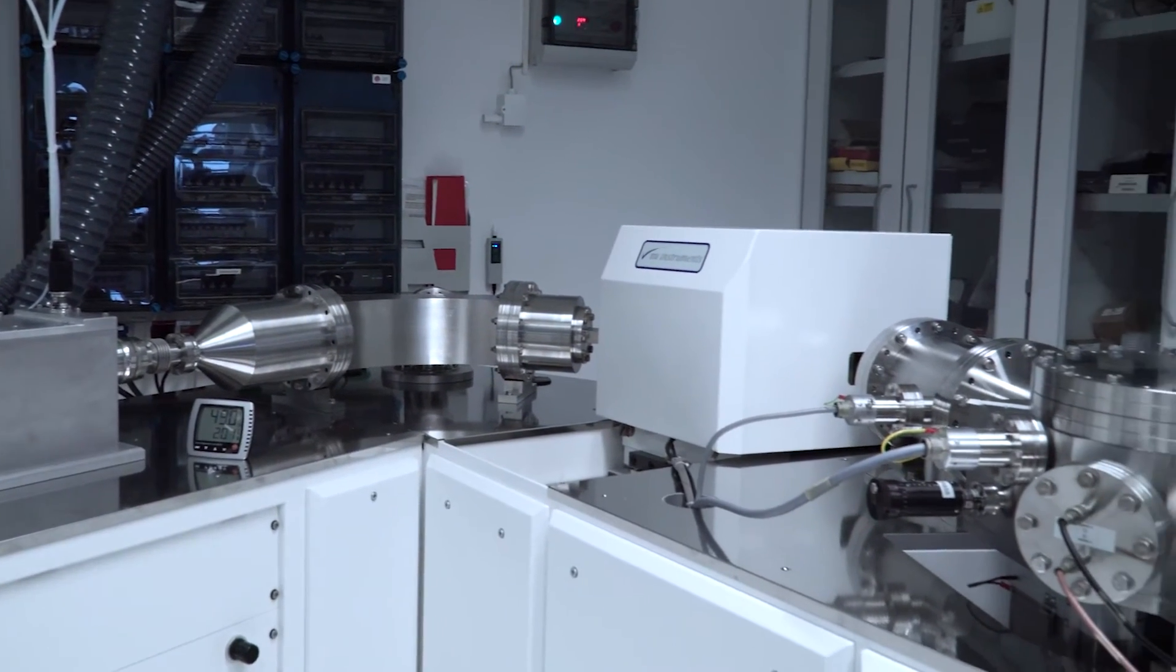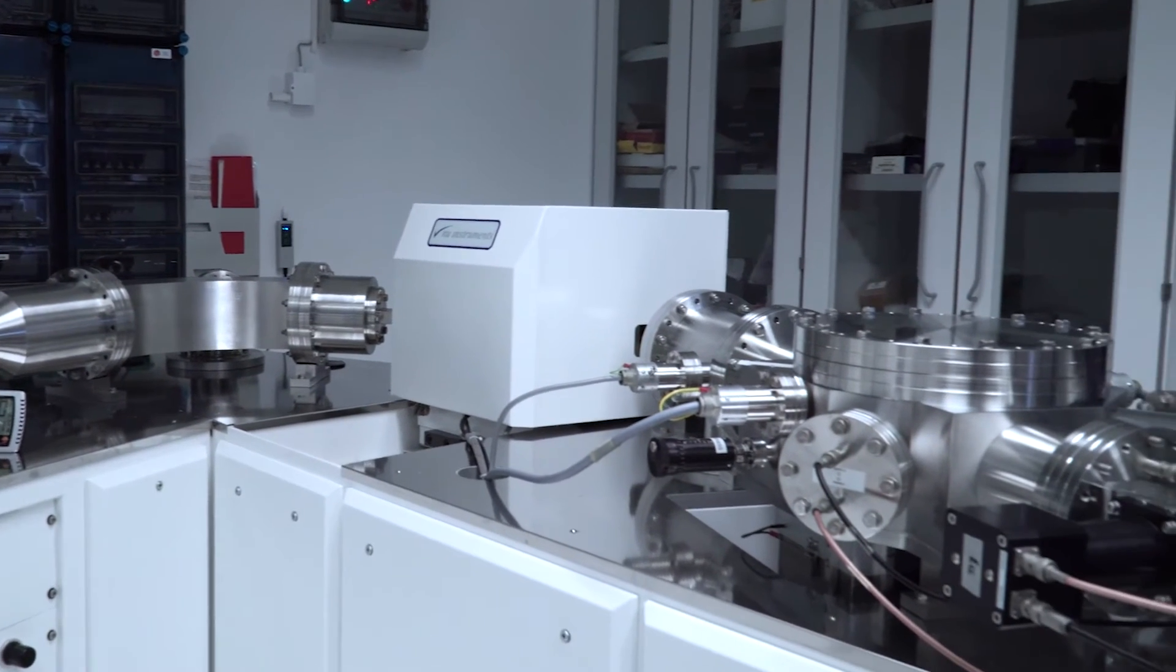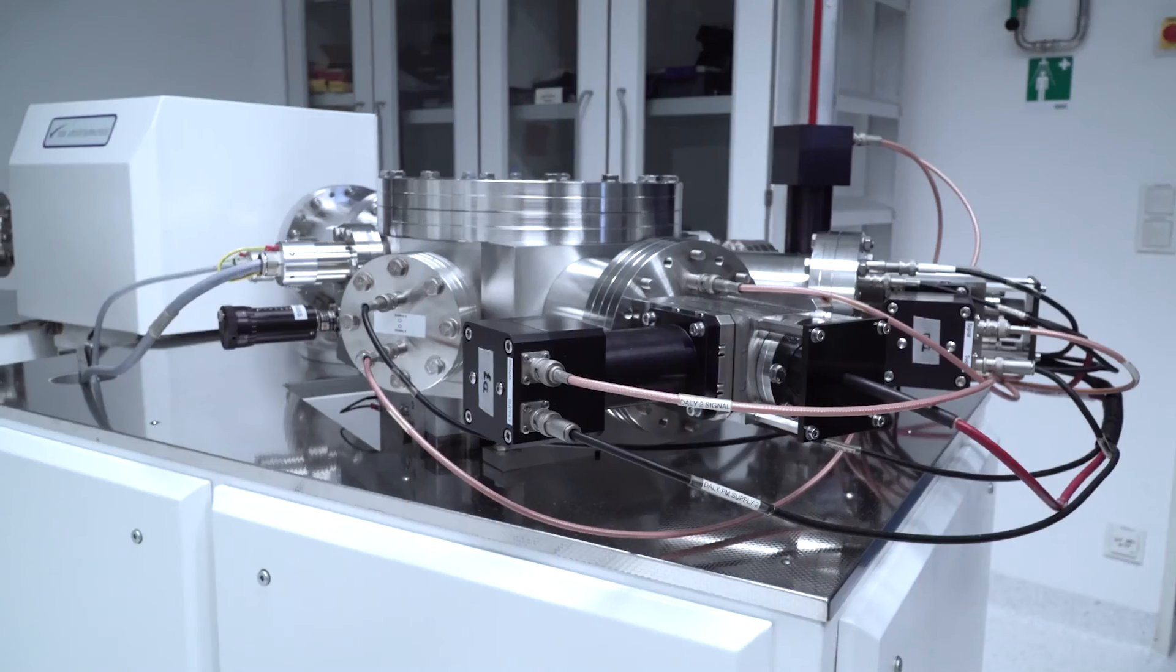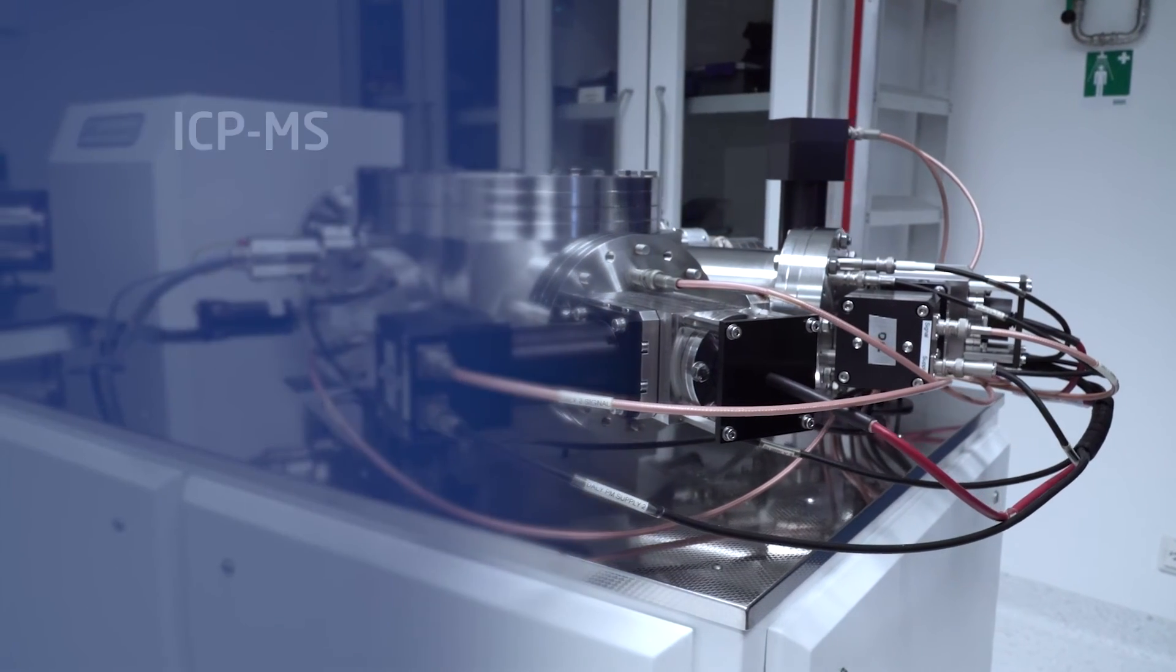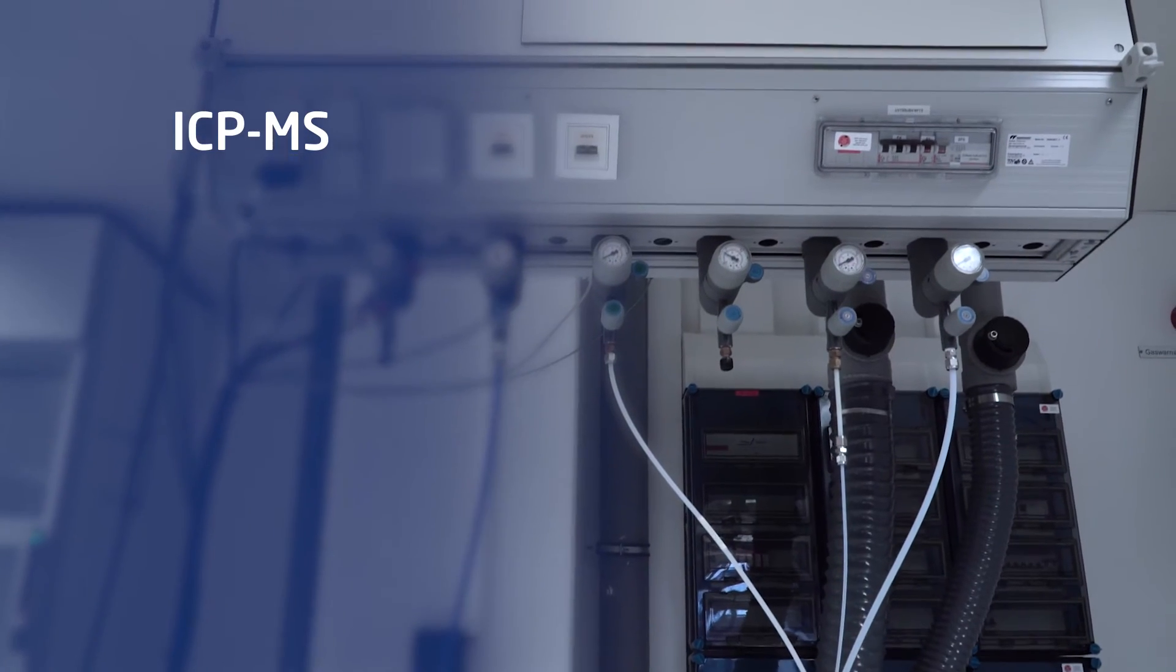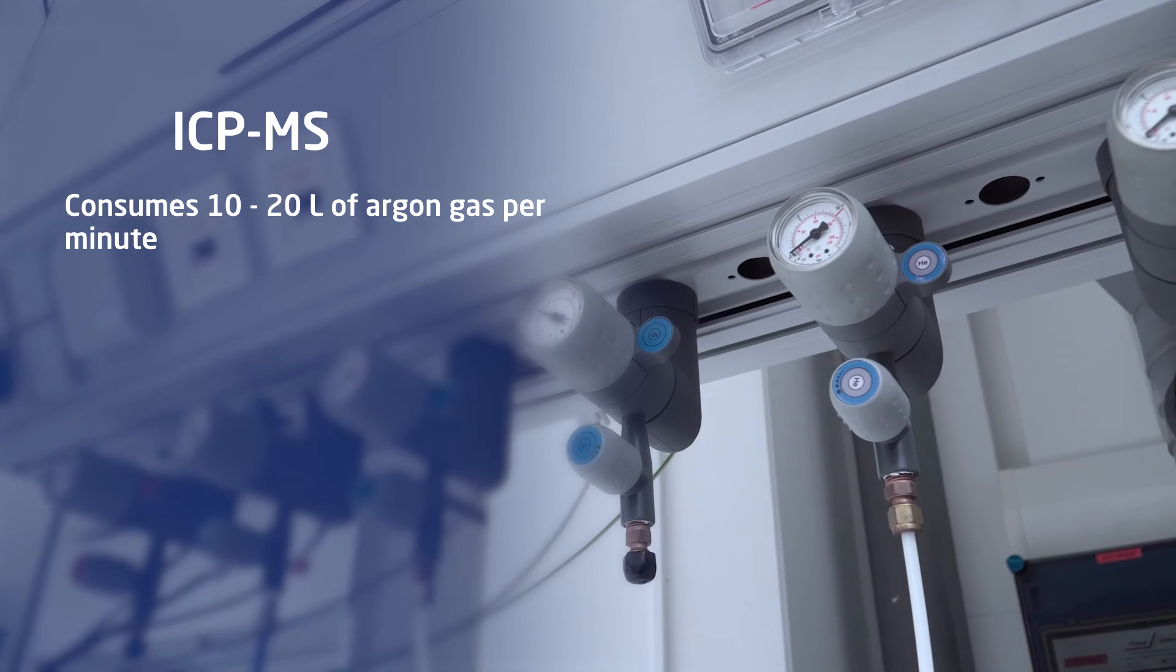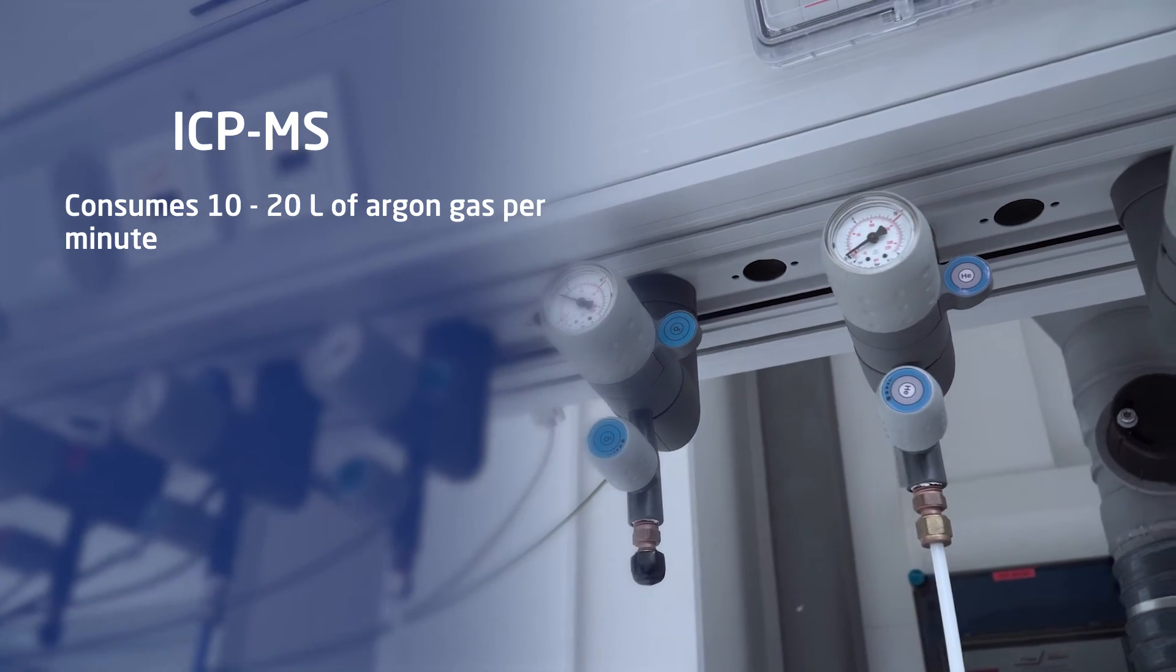The ICP-MS technique can measure extremely small concentration for some analytes, parts per trillion or even parts per quadrillion. But it is also quite demanding regarding lab requirements. A typical ICP-MS consumes 10 to 20 liters of argon gas per minute.